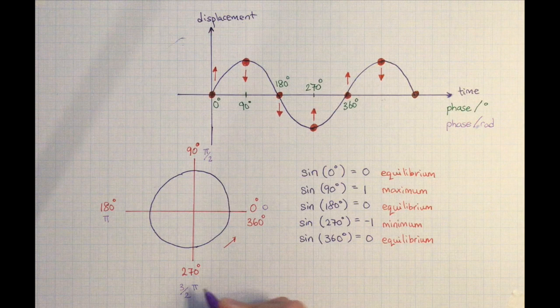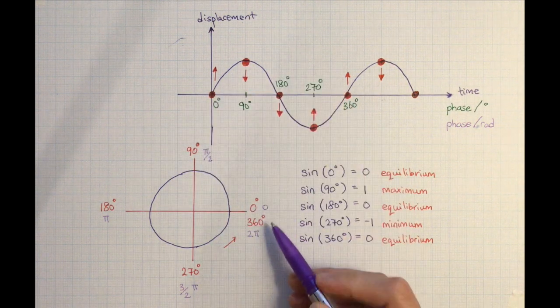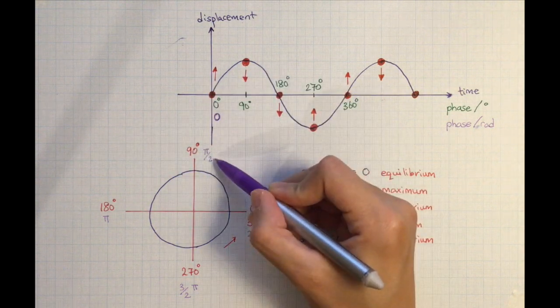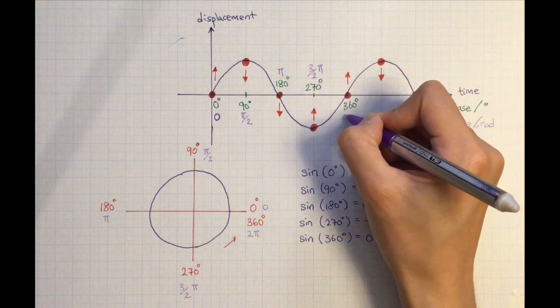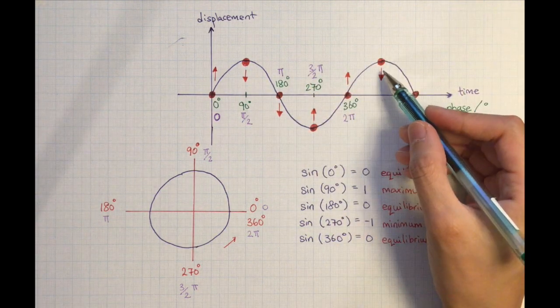That applies to our wave as well. A complete oscillation of a wave is 2 pi. Half an oscillation is just pi. Then half of that is pi over 2. Then after one cycle or one oscillation of the wave, we can carry on and restart the cycle.